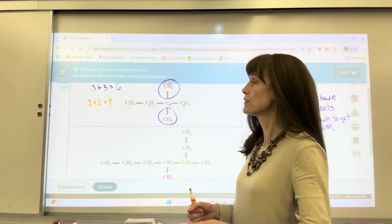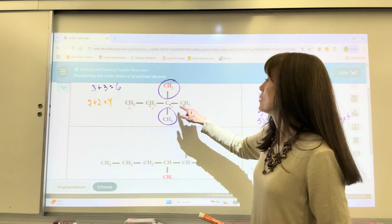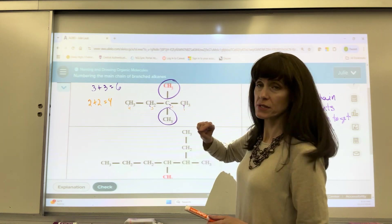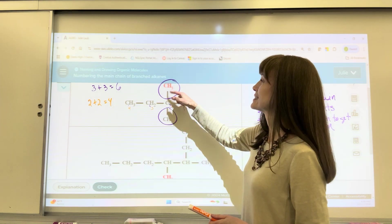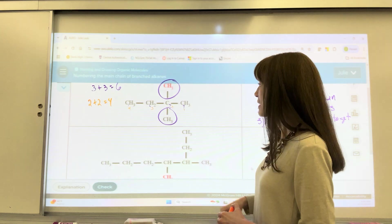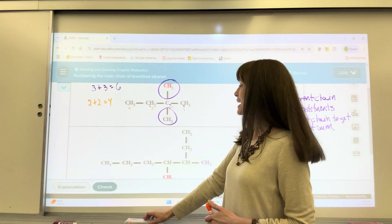Now, for those of you who have already learned how to name, this would be called 2, 2-dimethylbutane. I said the location of both the substituents. Because they're the same substituent, I had to add the word di to it for dimethyl. And then our longest chain was 4. That's bute, all single bonds, butane.